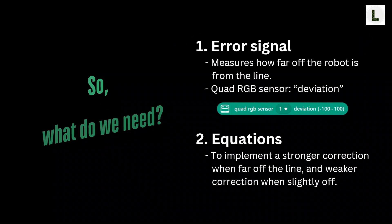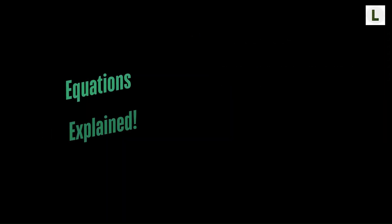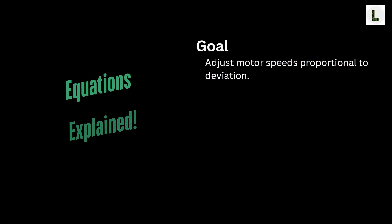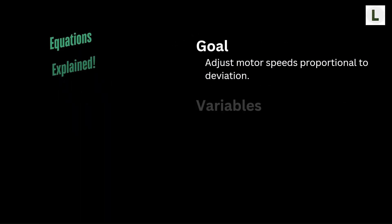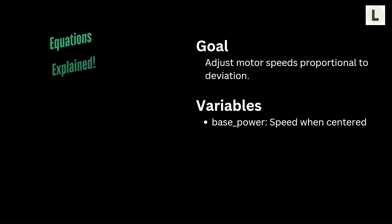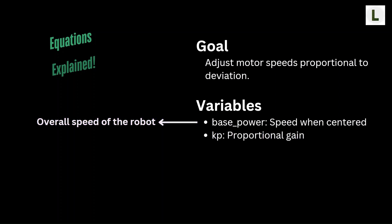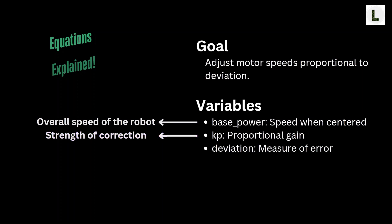The error signal is given to us directly by mBlock using the Quad RGB sensor's deviation block. Now let's break down the equation for proportional control. Our goal is to adjust the motor speeds based on how far the robot is from the center of the line. We define three variables: base power — the default speed when the robot is centered and driving straight; Kp — the proportional gain, which is a correction factor where larger values mean stronger corrections; and deviation — provided by the Quad RGB sensor, ranging from minus 100 to plus 100, measuring how far off the robot is from the center of the line.